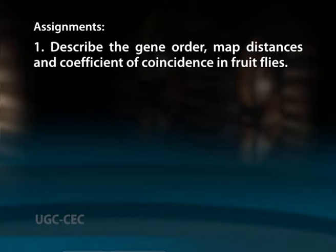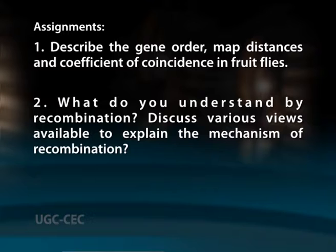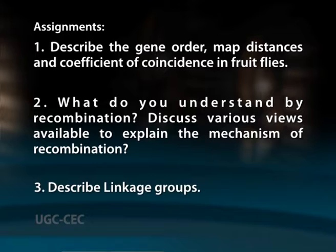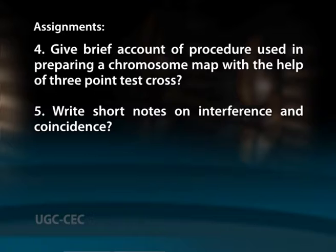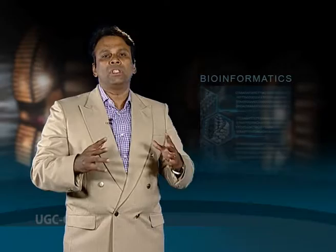Some assignments based on today's discussion: One, describe the gene order, map distances and coefficient of coincidence in fruit flies. Two, what do you understand by recombination? Also discuss various views available to explain the mechanism of recombination. Three, describe linkage groups. Four, give a brief account of the procedure used in preparing a chromosome map with the help of a three-point test cross. Five, write short notes on interference and coincidence.